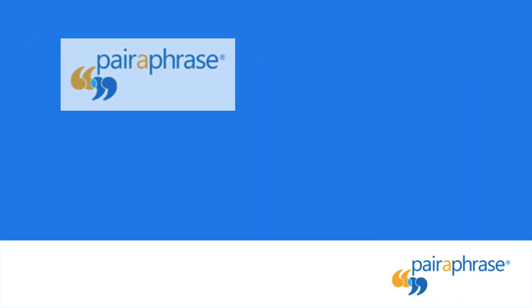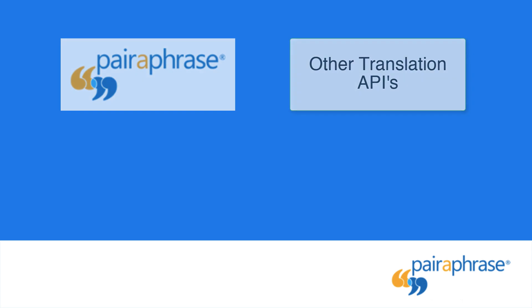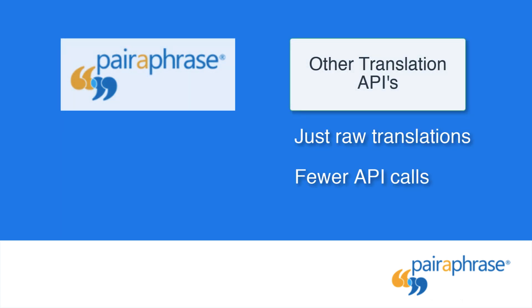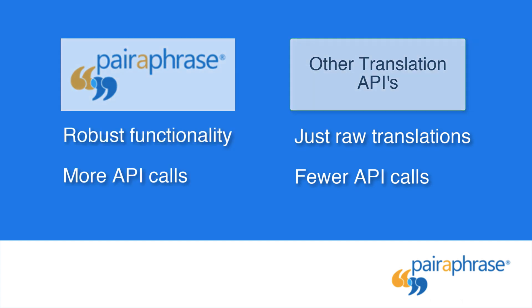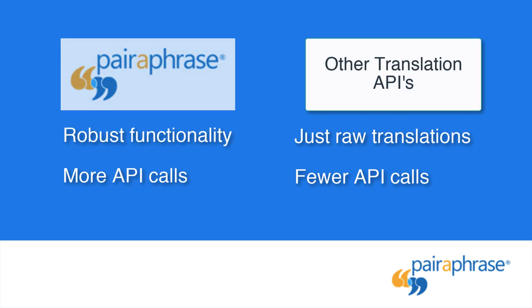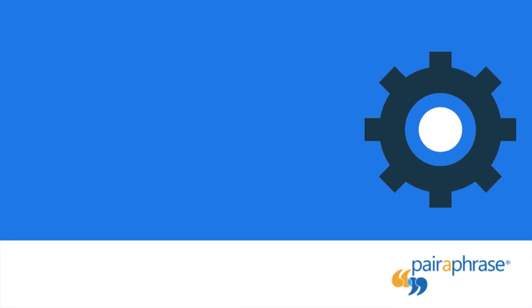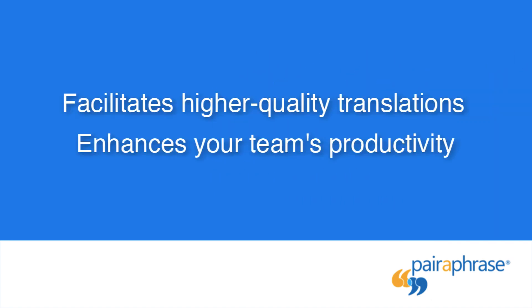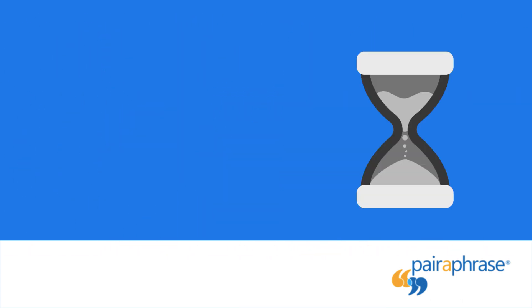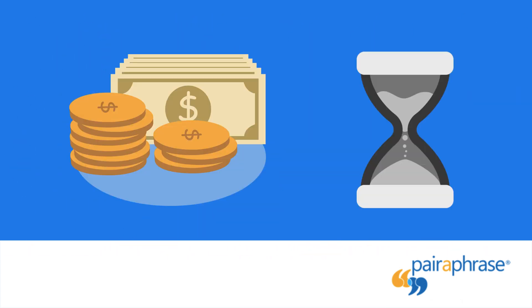The Paraphrase API is different from other translation APIs because it gives you access to a lot more than just raw translations. With Paraphrase, you get robust translation functionality and more API calls. Its advanced translation technologies facilitate higher-quality translations and act as productivity enhancers. Users benefit from Paraphrase because they save time on translation projects and reduce their translation costs.